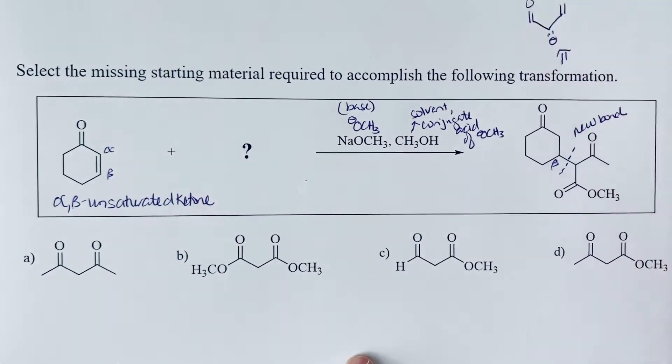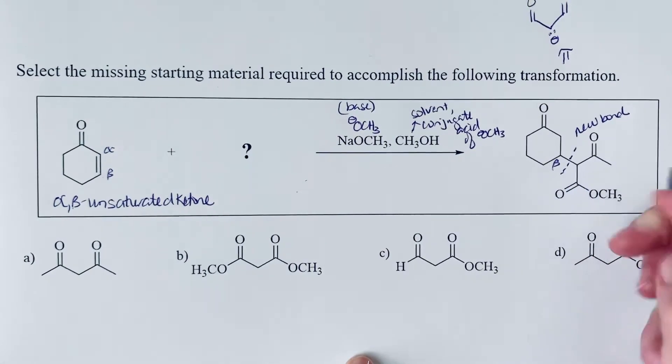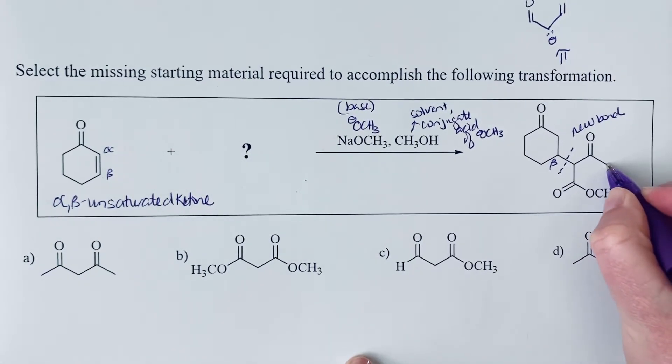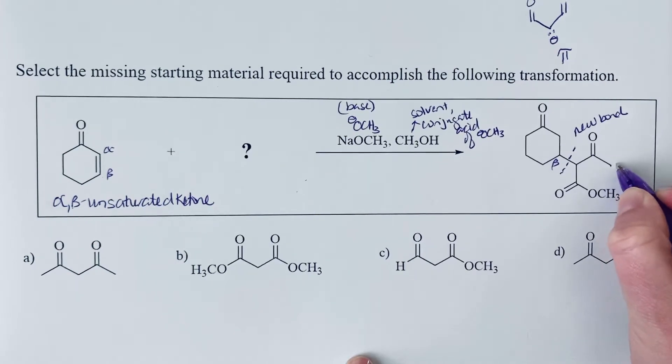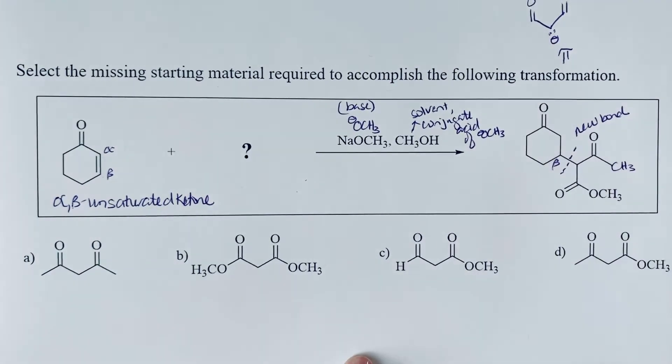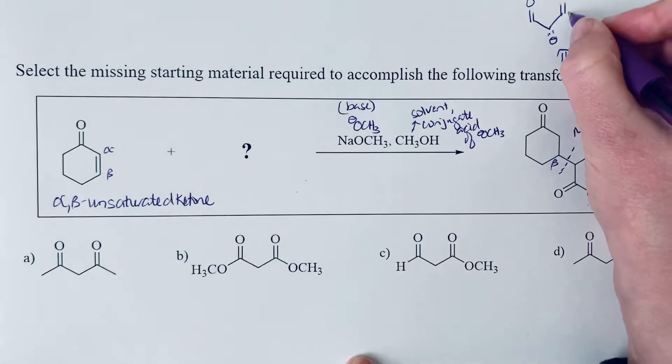And now we're just going to see what's attached to the carbonyl. So on one side we see that we have a ketone, so recognizing that the end of this chain is a carbon, so it is a CH3 group. And then we have an ester on the other side.